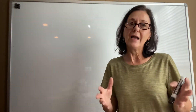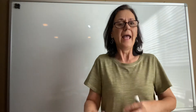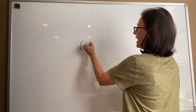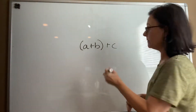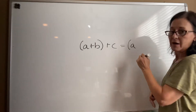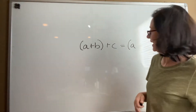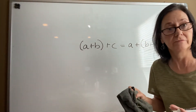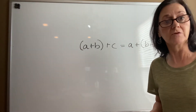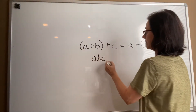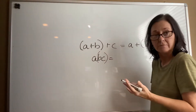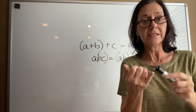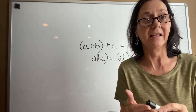The associative property says you can associate with different groups and still be the same. So you can have a associated with b, and add c separately, or you can have a by itself and associate b with c — you get the same value. The same applies to multiplication: a times b times c in any grouping gives the same result. This also connects to order of operations: Please Excuse My Dear Aunt Sally — Parentheses, Exponents...